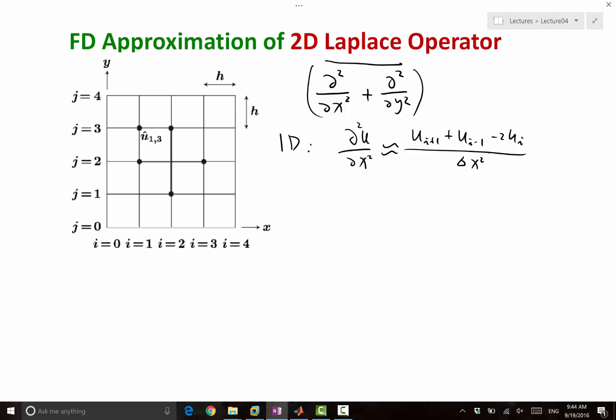And just to remind, order of accuracy means as delta x goes to 0, how fast does the error of this approximation go to 0? And do we remember what is the order of accuracy of this scheme? It's second order, which means the truncation error, the error of this approximation, scales like delta x squared. If it scales like delta x, it's called first order.